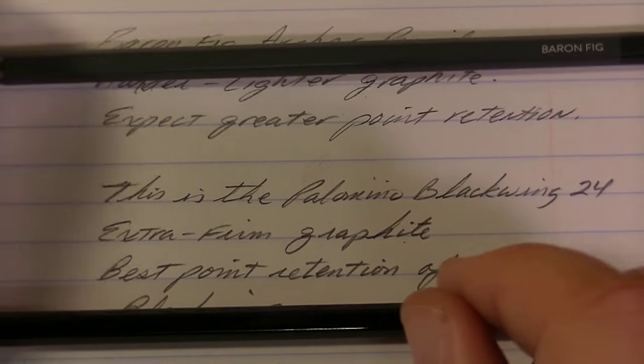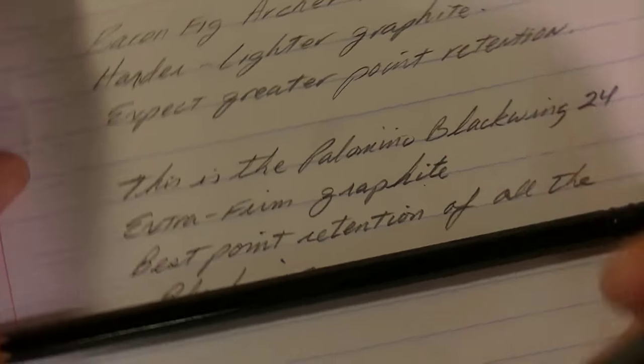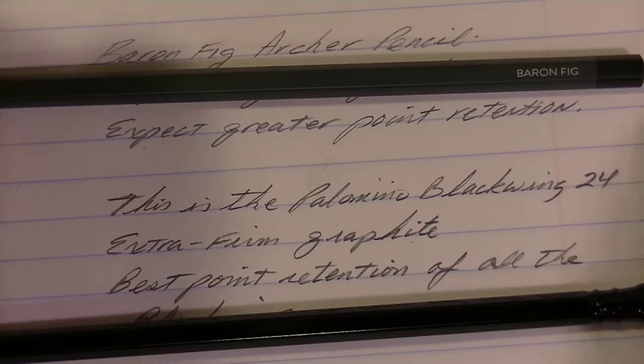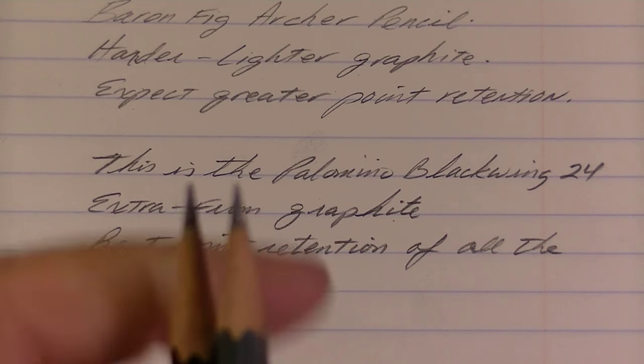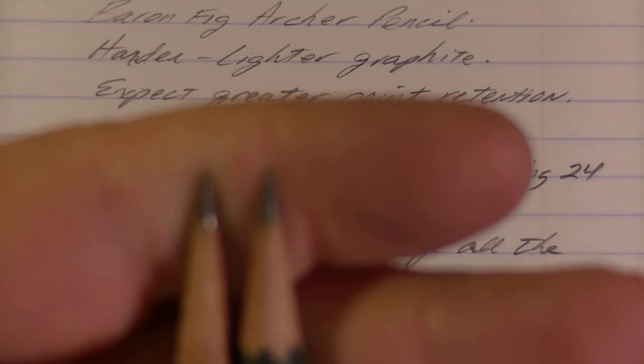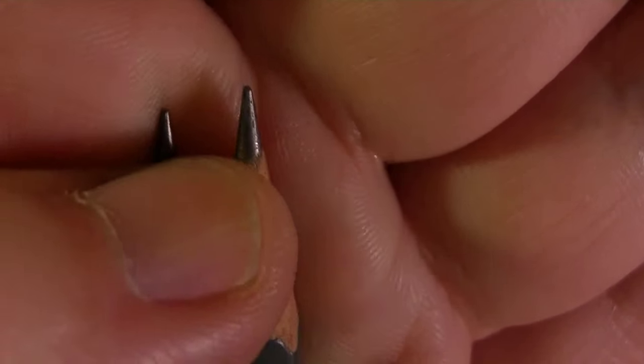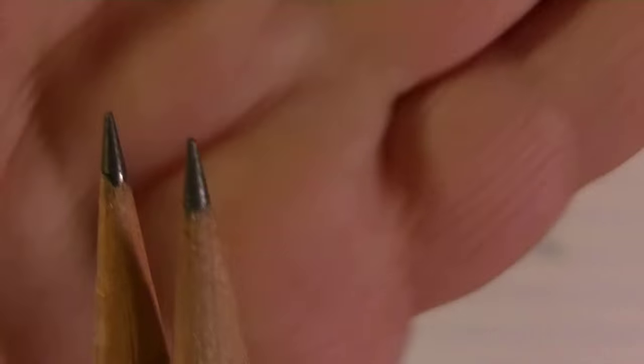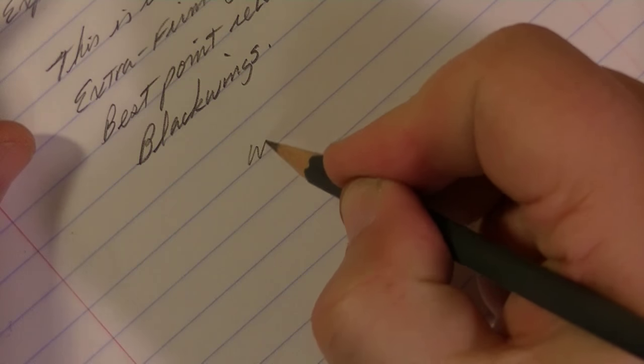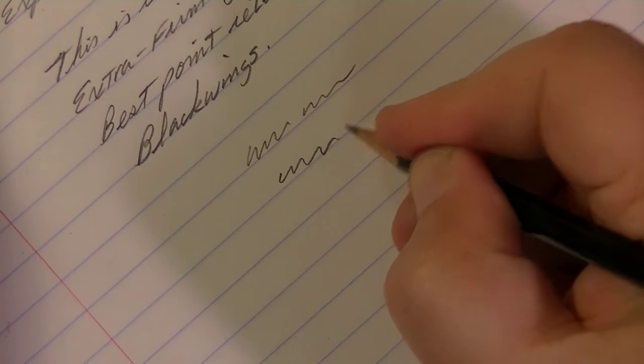So the Baron Fig is definitely a harder graphite and you'll definitely feel it as you're writing. You'll be able to notice that it is harder when you write. There's nothing wrong with that. If that's what you enjoy. But as far as point retention, what I can tell immediately was that the Blackwing was wearing down faster. And I'm going to show you here and I'm not sure if it will be visible, but we'll take a look at this.